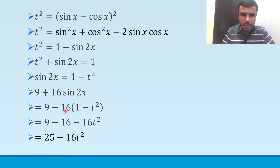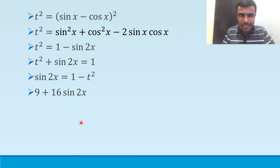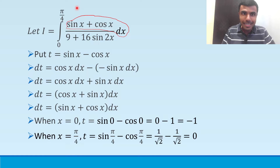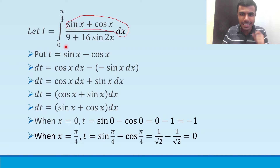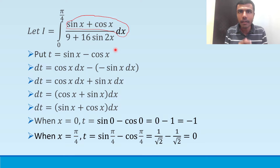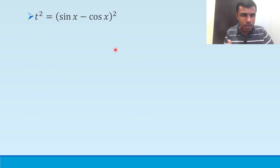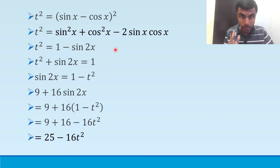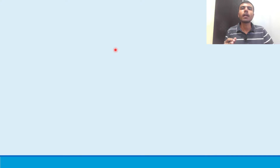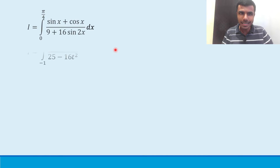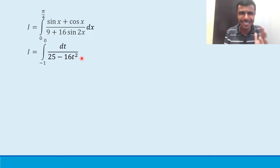So instead of 9 + 16 sin 2x I have 25 - 16t². In place of the numerator I have dt, the limits change to minus 1 and 0, and the denominator becomes 25 - 16t². Now we are ready for our integration. 25 can be written as 5², and 16t² as (4t)². This is now looking like the standard form ∫dx/(a² - x²).